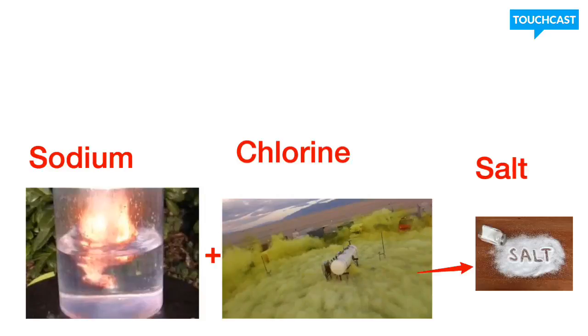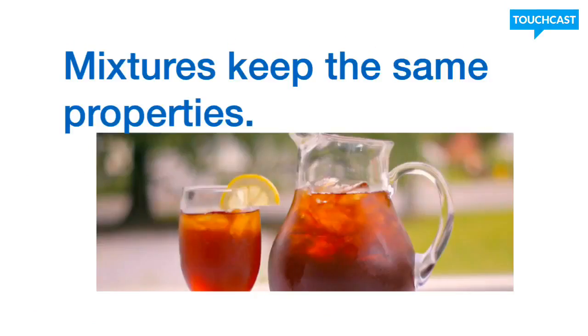All right. Let's look at our next thing. All right. Now, the next thing we're going to look at is the difference between mixtures and compounds. The main difference is mixtures are going to keep their same properties. An example is iced tea. Basically, the tea leaves still have their same flavor. The water still has all the properties of water. And the sugar still has the same flavor. The properties have not changed any. There's just two substances sharing the same space.